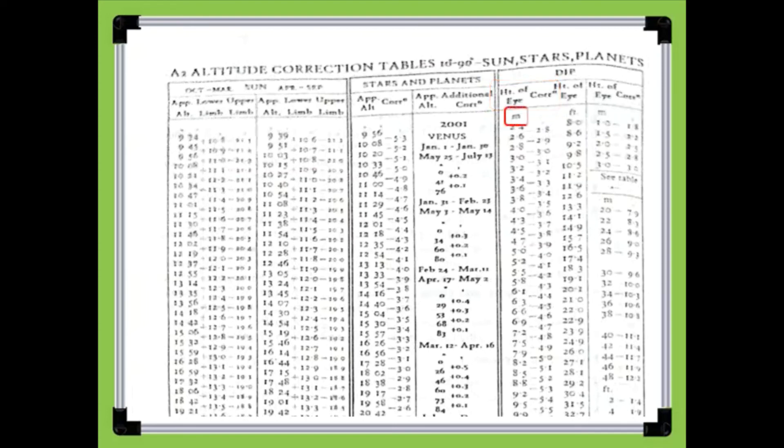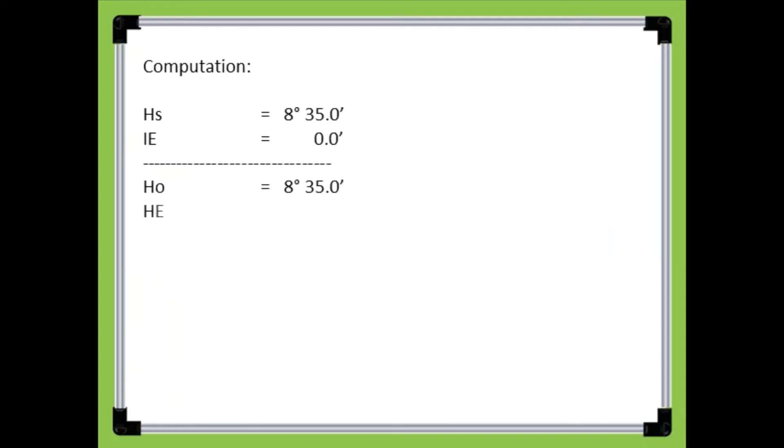Under the height of eye column, locate the meter column. Move down and locate 8.0 meters, which can be found between 7.9 meters and 8.2 meters. Then the corresponding correction value will be found. The height of eye correction is 5.0 minutes.